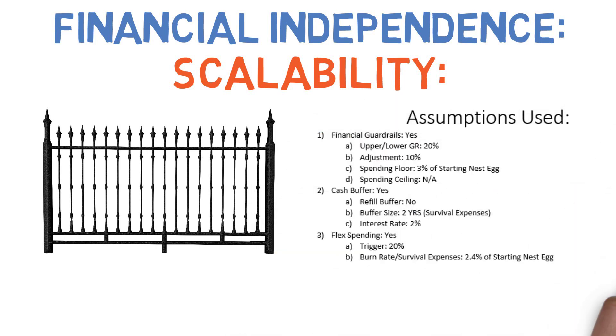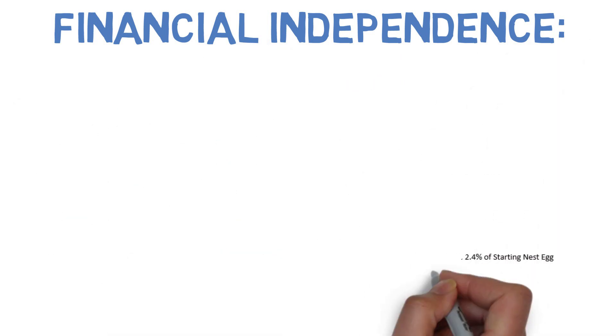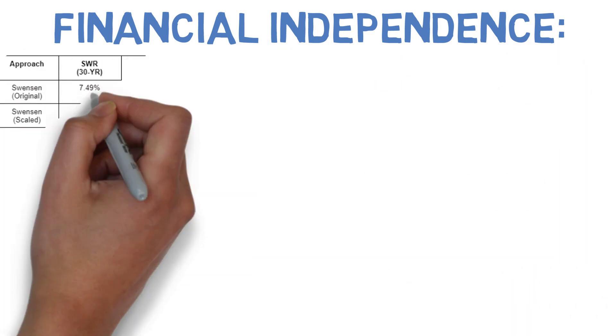I re-ran all the simulations for the Swenson portfolio using the following assumptions. The upper and lower guardrails are set to 20% above or below the initial safe withdrawal rate. The trigger indicates how far our investments will have to fall below their all-time highs before our cash buffers or flexible spending budgets will be used. The spending floor is the lowest our hypothetical investor will spend in a year regardless of what the financial guardrails tell him to do unless his investments have fallen below that trigger threshold, in which case they'll be living on their survival expenses or their burn rate. With that being said, here's how the numbers came out.